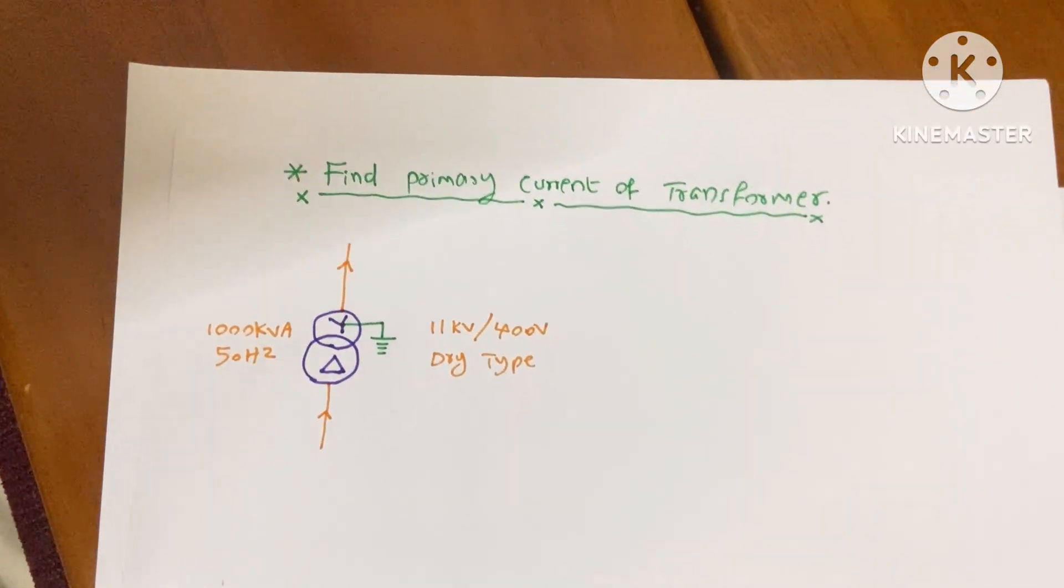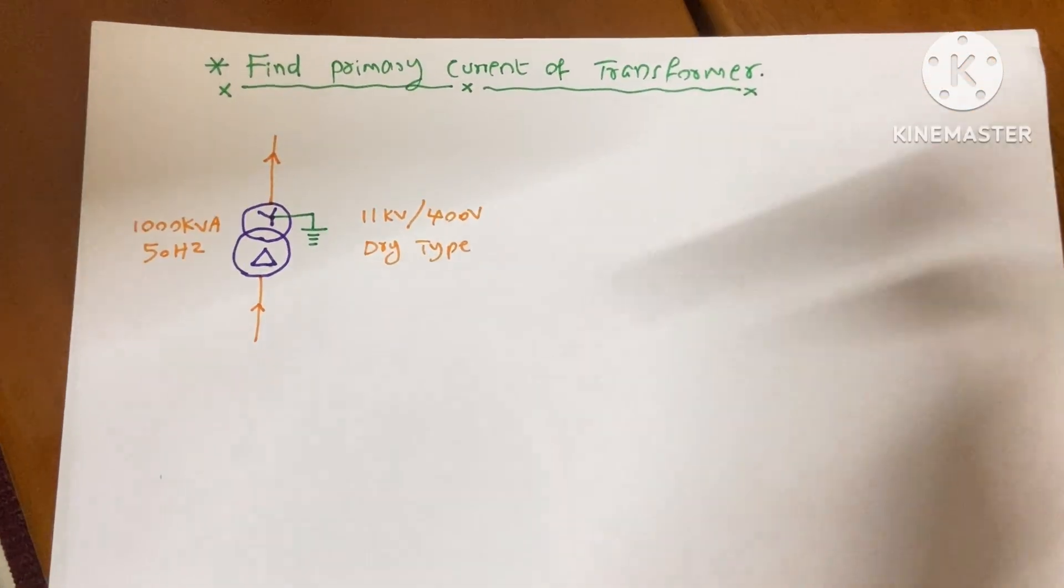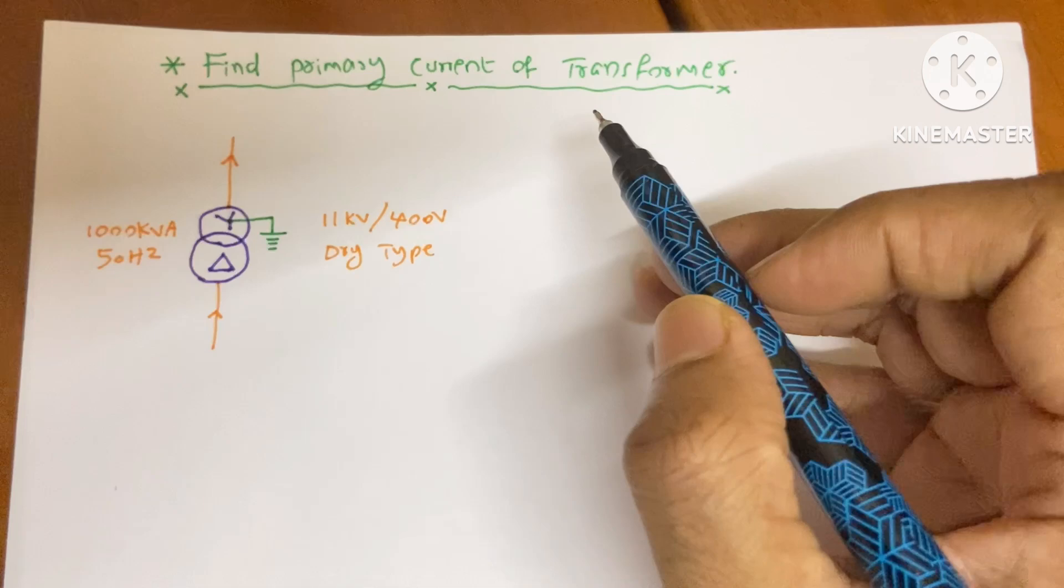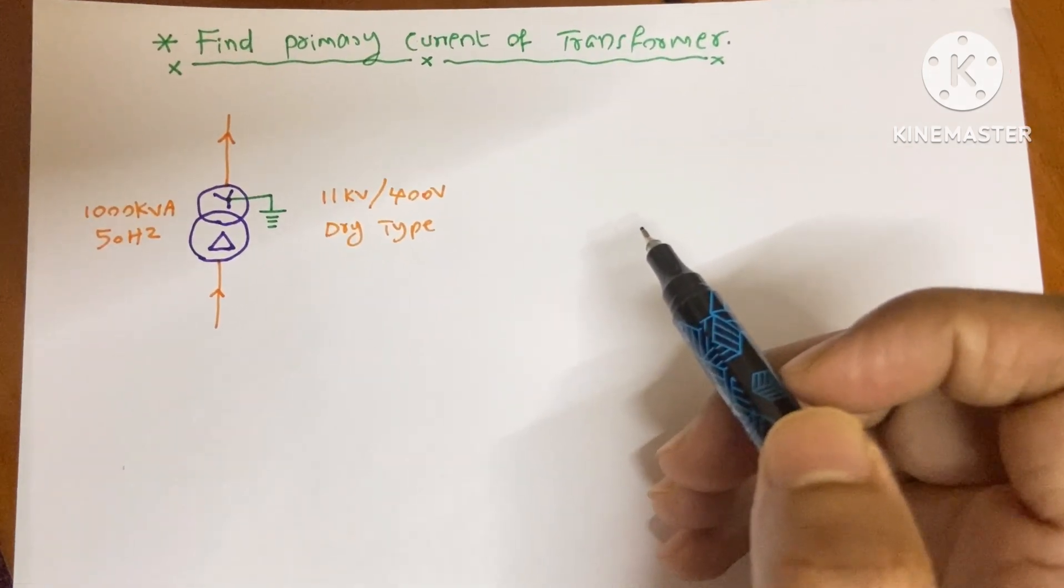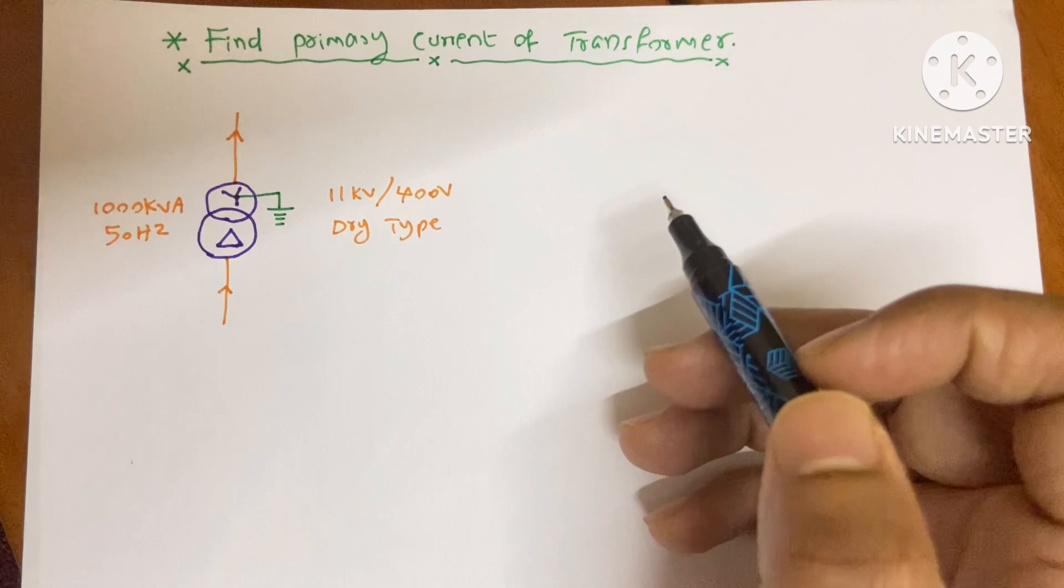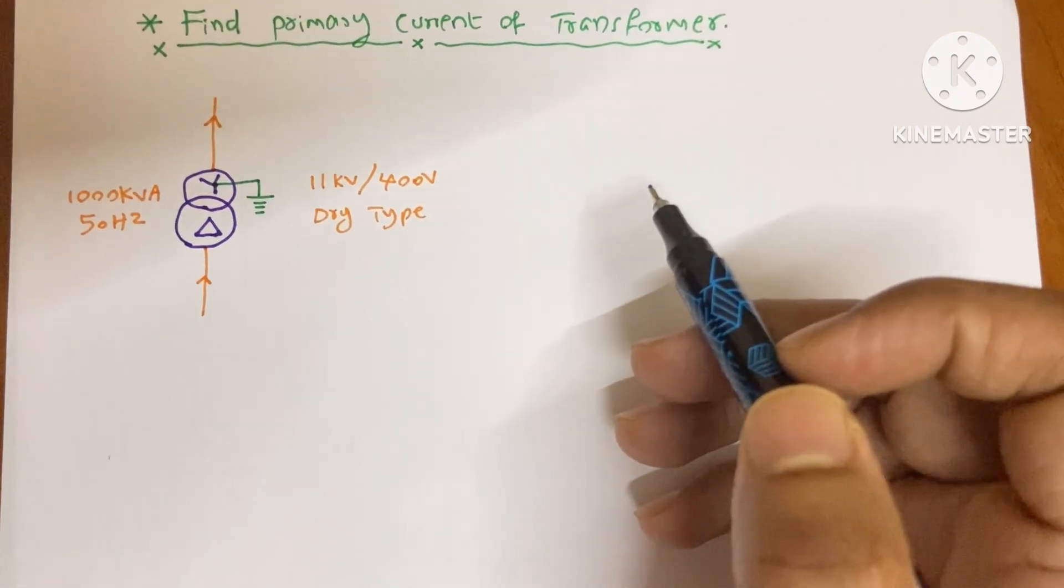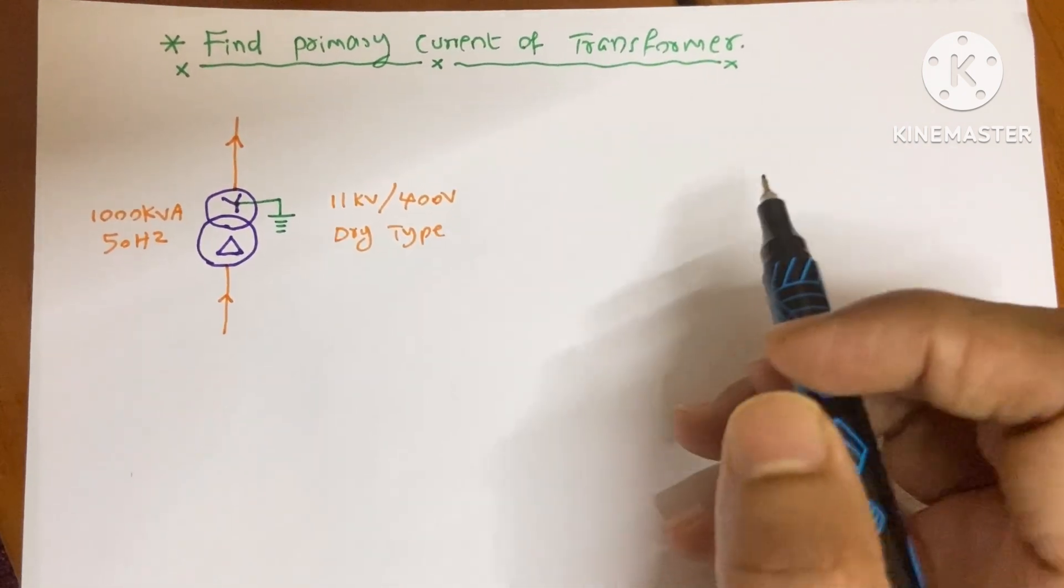Today I am going to discuss with you about how to find the primary current of a transformer. We are going to find the current through an easy step. We require only two seconds to find the current, so please don't skip this video.